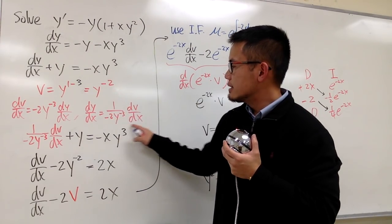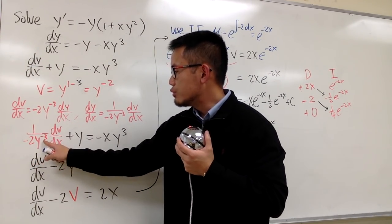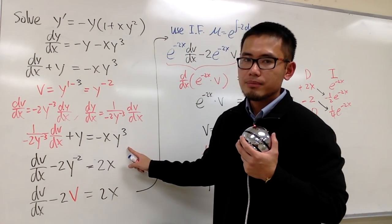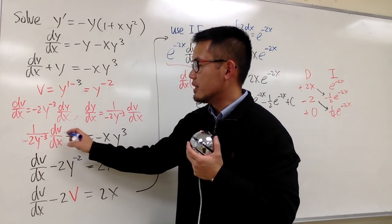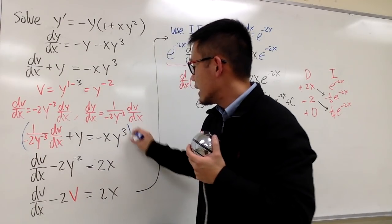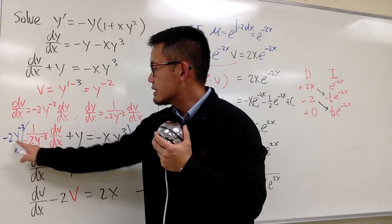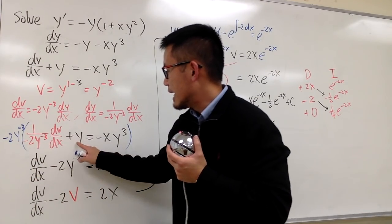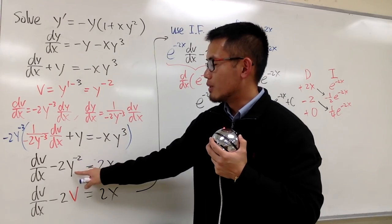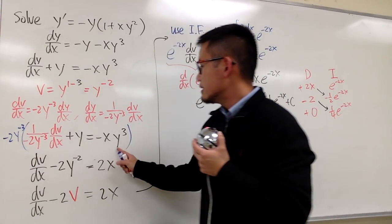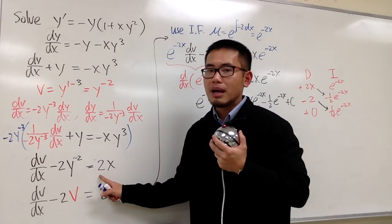I'll replace dy/dx in the equation: it becomes 1 over (negative 2 · y to the negative 3) times dφ/dx. I want just 1 in front of dφ/dx, so I multiply everything by negative 2 · y to the negative 3. This cancels with the denominator on the left, leaving dφ/dx. On the right, negative 2 times y to the negative 3 times y equals negative 2 · y to the negative 2. For the last term, y to the negative 3 times y to the third is y to the zero — no more y — so negative 2 times negative x is just positive 2x. We still have y to the negative 2, but that's just φ, so we replace it back.